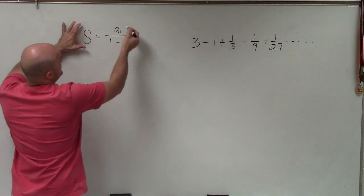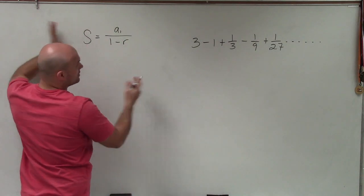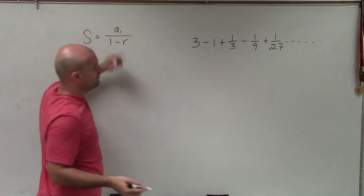And we have the formula right here. The sum equals a sub 1 divided by 1 minus r. So to go ahead and do this, we first need to figure out what r is and what a sub 1 is.